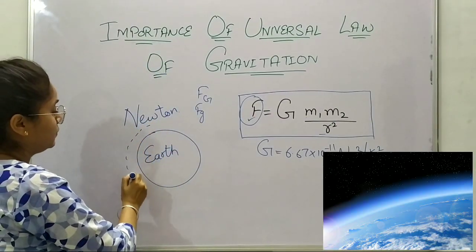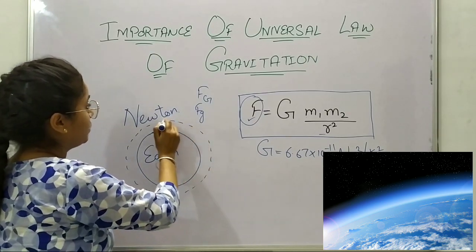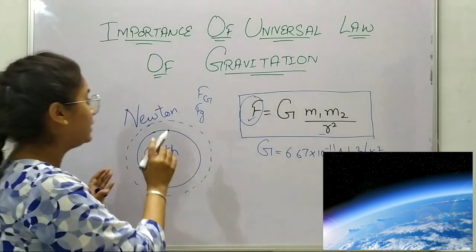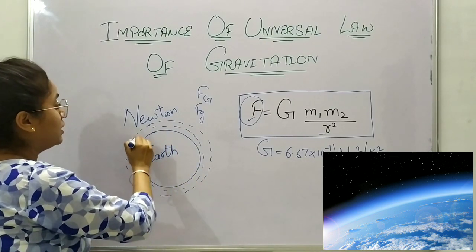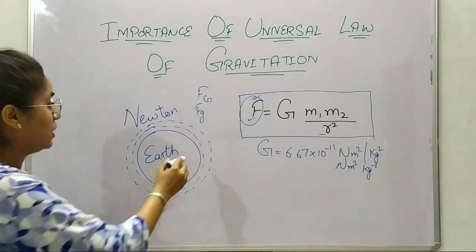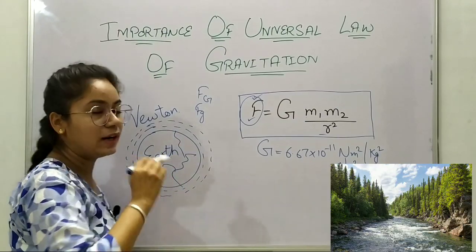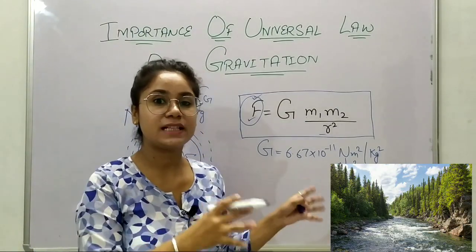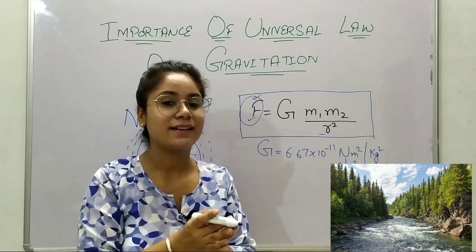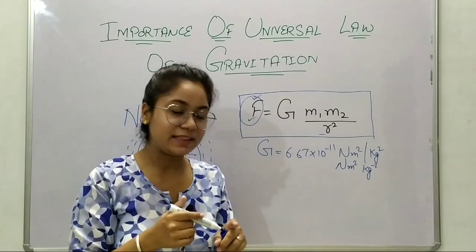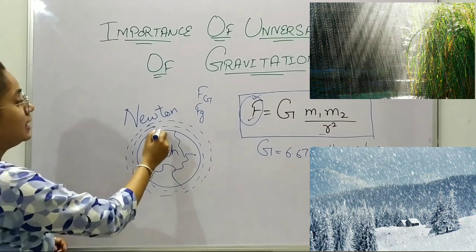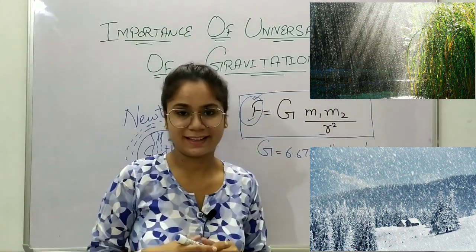Not only that, even the atmosphere around Earth — the stratosphere, troposphere, and other layers — are all bounded around Earth because of this gravitational force of attraction. The water on Earth, the flowing rivers, are also kept in place because of this gravitational force of attraction.